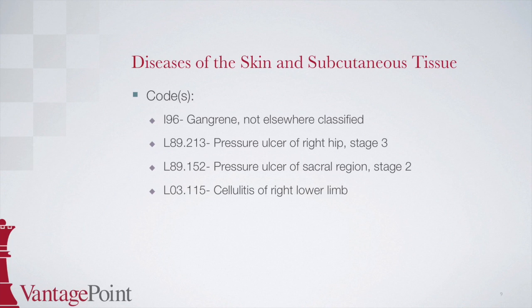The order for the codes in this scenario is important. The guidelines state that gangrene must be coded first if present. Then the remainder of the codes should be sequenced from most to least severe. Therefore, the stage 3 ulcer would be sequenced before the stage 2 ulcer. Cellulitis is the least severe, which is why it goes last.